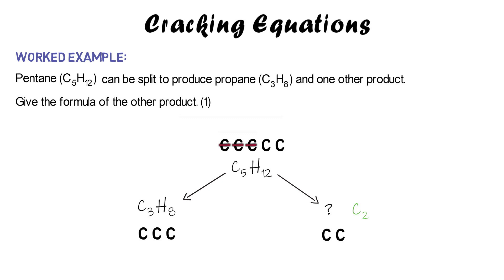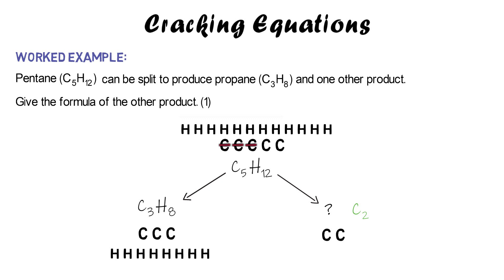Now do the same for the hydrogens. Pentane has 12 hydrogens, and the first product takes up eight of those. We need to work out how many are left — four hydrogens remain for the second product, so that part of the formula is H4. Therefore the formula of the missing product is C2H4.